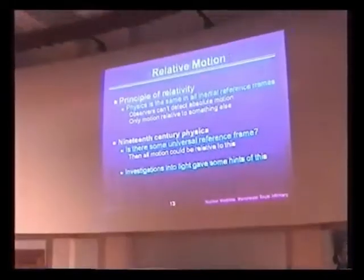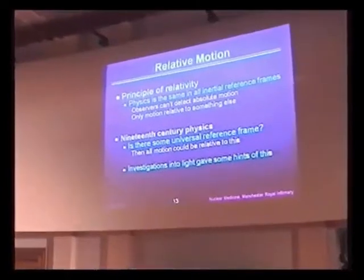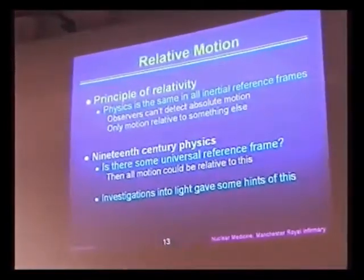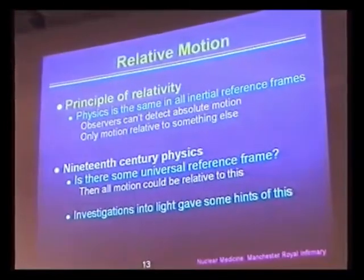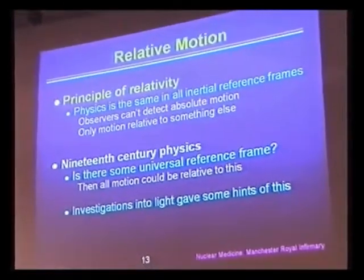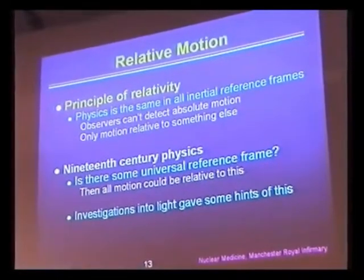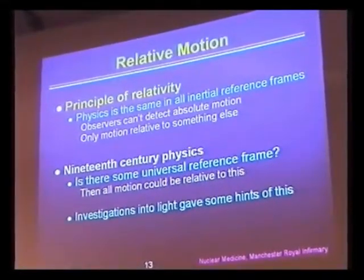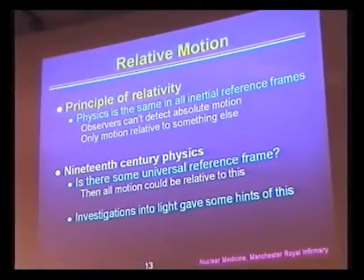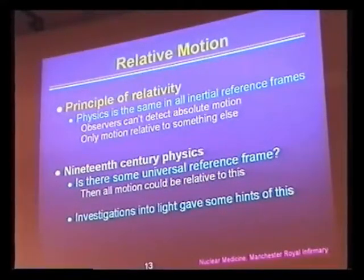What we've seen so far is that the principle of relativity says that physics is the same in all inertial frames — that is, moving with a constant velocity. An observer can't detect absolute motion, only motion relative to something else.